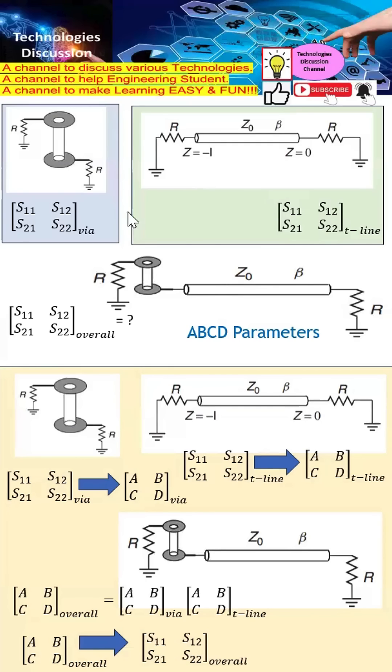However, to integrate these two S parameters into one is not easy. The first thing you need to do is convert them into ABCD parameters. This is how we can convert them into ABCD parameters.